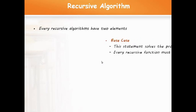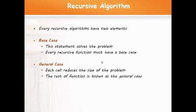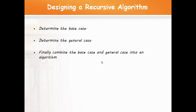Every recursive algorithm has two elements: a base case and a general case. The base case is a statement which solves a particular part of the problem, whereas the general case reduces the size of the problem. Every recursive function must have a base case, and the rest of the function is the general case. To design a recursive algorithm, first determine the base case, then determine the general case, and combine them into an algorithm.